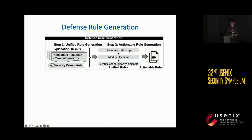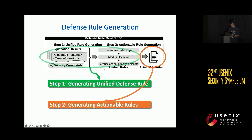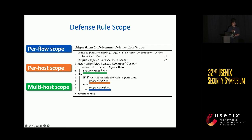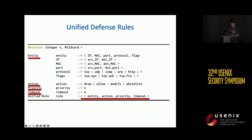After the explanation, we proceed to generating rules. First, we create unified defense rules suitable for different defense tools. Second, we define how unified rules are deployed to specific tools, such as iptables rules. To balance precision and generalization, we use the concept of rule scopes, defining three scopes: the per-flow scope, the per-host scope, and the multi-host scope. For different network attacks and environments, we may utilize different scopes collaborating with network operator requirements. Each unified rule consists of four fields: entity, action, priority, and timeout. The entity is the target we apply the rule on; timeout is used to discard old rules and make space for new ones; and priority resolves conflicts between rules, with higher priority rules executed first.